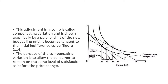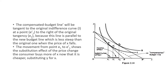The compensating variation allows the consumer to remain at the same level of satisfaction as before the price change. The compensated budget line is tangent to the original indifference curve at point E1, because this line is parallel to the new budget line, which is less steep than the original one when the price of commodity X falls. The movement from E1 to E1-dash shows the substitution effect — the consumer buys more of X now that it is cheaper, substituting one commodity for the other.